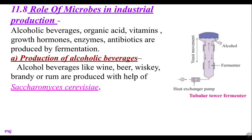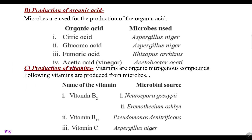For production of alcoholic beverages, wines, beer, whiskey, brandy and rum are produced with the help of microorganisms. Remember Saccharomyces cerevisiae — that is the important microorganism used for alcoholic beverages. Then production of organic acids: for example, citric acid uses Aspergillus niger; gluconic acid uses Aspergillus niger; fumaric acid uses Rhizopus rhizus; and acetic acid, commonly known as vinegar, uses the microbe Acetobacter aceti.